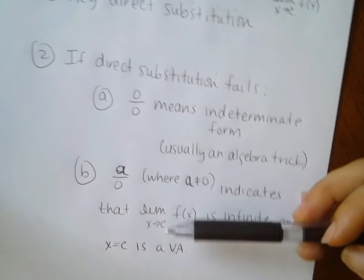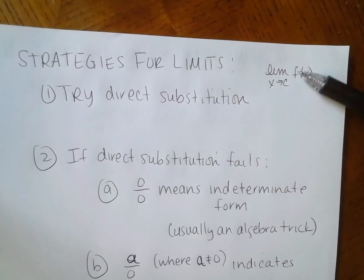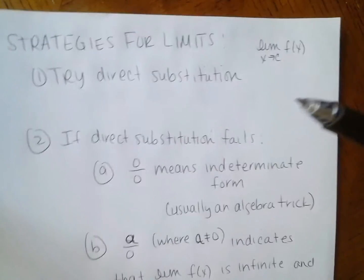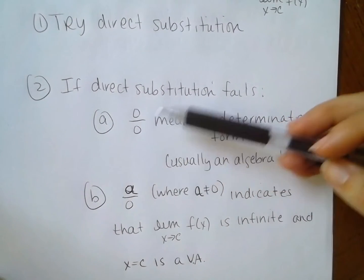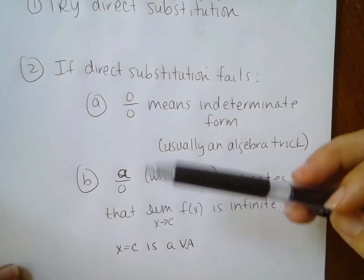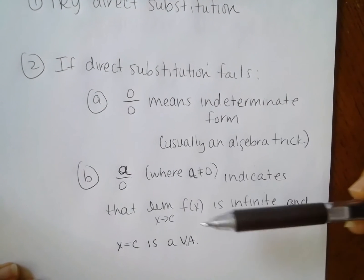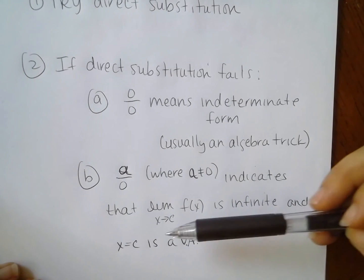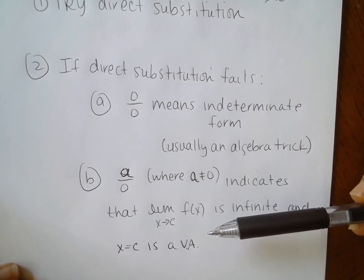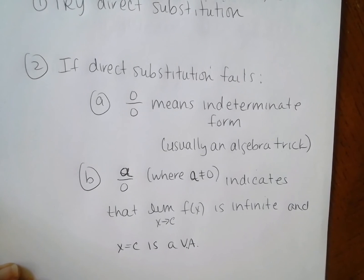So those are the three things that can happen when I plug in my value c: I can get out a number and I'm finished; I can get 0 over 0 and then we need algebra tricks; or if I get a number over 0, I know my limit is infinite. And then if I want to, I can look at the right and left-hand behavior and see whether they're going to positive or negative infinity.